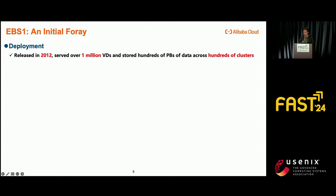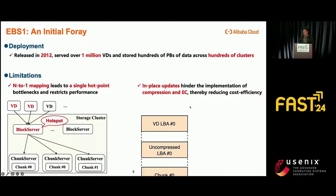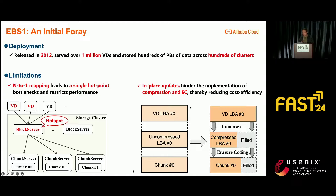But the features of EBS1 can turn into limitations over time. First, with more users using our service, workload bursts become common. Under the N-to-1 mapping, hot virtual disks can easily drain the resources of a block server and impact other virtual disks. Note that migrating a hot virtual disk to other block servers may not be useful, as the migration can take longer than the burst. Second, SSDs became more accessible but with a much higher price tag, so we want to use data compression and erasure coding to save space cost. But with in-place updates, this is challenging due to misalignment.